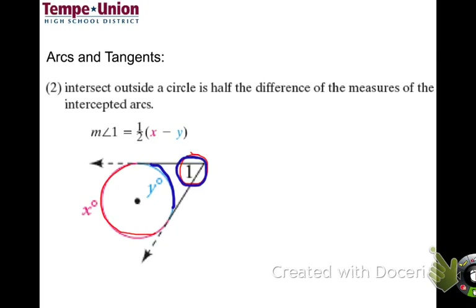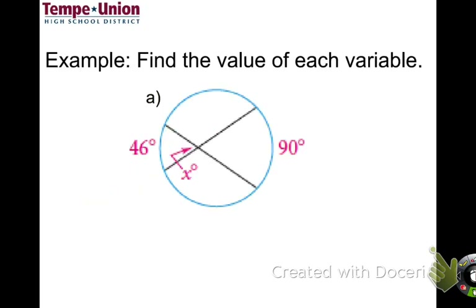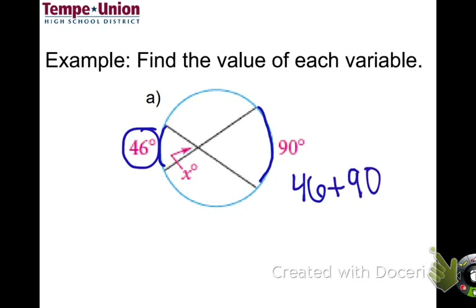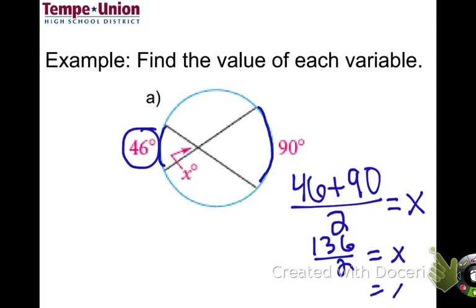Let's find x. These two arcs are on the outside, so we add them together: 46 plus 90. Then divide by 2. That gives us 136 divided by 2, which equals 68. So x equals 68 degrees.